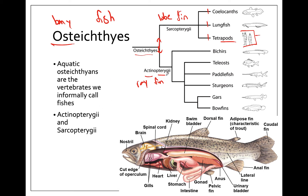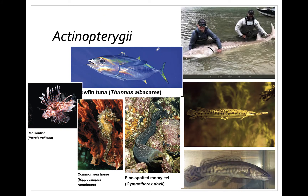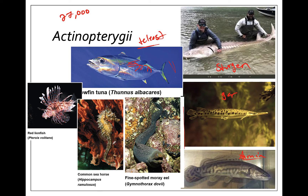The Actinopterygii are probably the most familiar fish — there are about 27,000 species. They all have bony rays supporting their fins, but the fins are fairly thin with no muscle inside the fin itself for walking or propulsive movement. Most muscle is in the body, so they move by sweeping their tail fin side to side. More basal groups include sturgeon, gar, and Amia. The largest group are the teleost fish, including lionfish, tuna, eels, and seahorses.